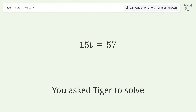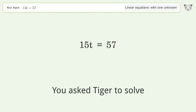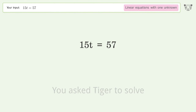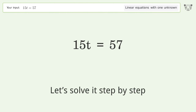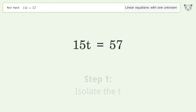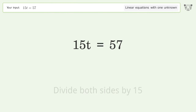You ask Tiger to solve this — it deals with linear equations with one unknown. The final result is t equals 19 over 5. Let's solve it step by step: isolate the t, divide both sides by 15.